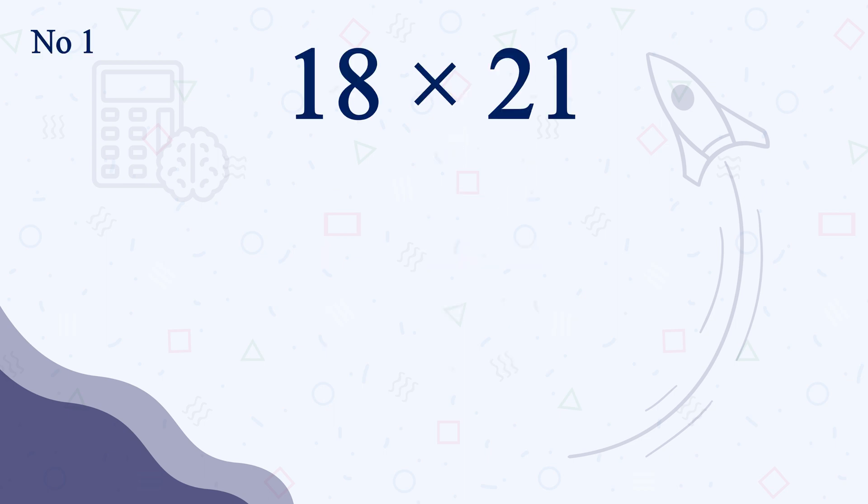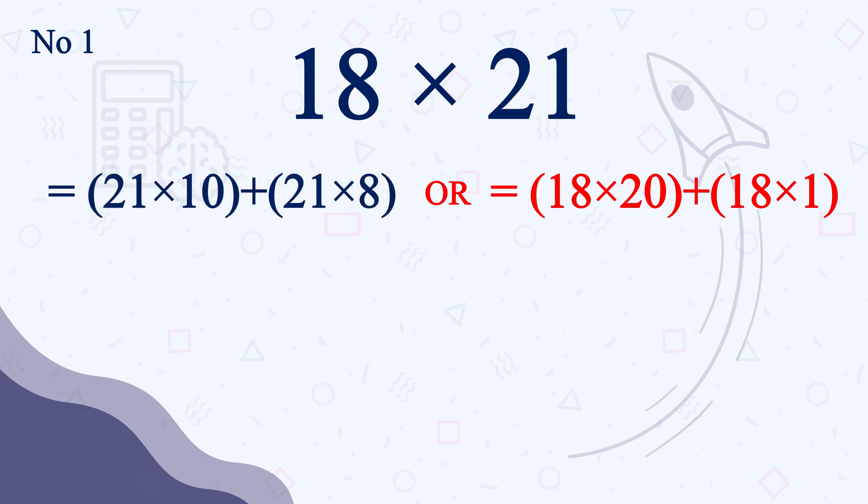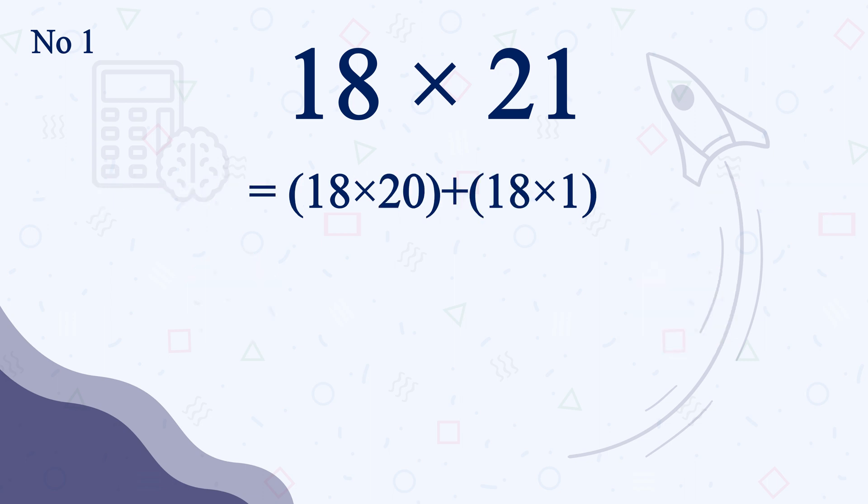So the number 1 is 18 times 21. You can break it down in two ways. Either 21 times 10 plus 21 times 8 or 18 times 20 plus 18 times 1. I will recommend not to do it in the first way. Rather, do it in the second way which is more efficient. It is 18 times 20 plus 18 times 1.